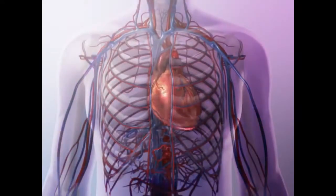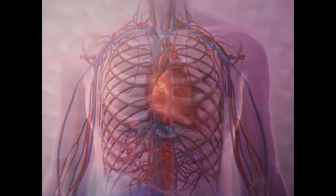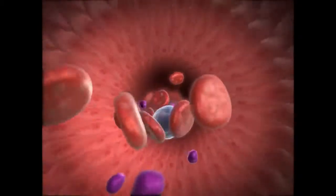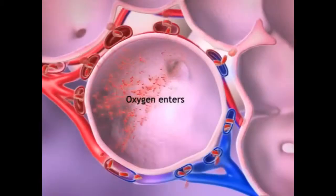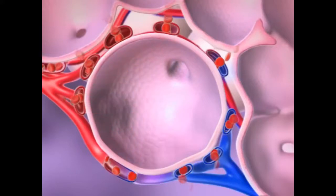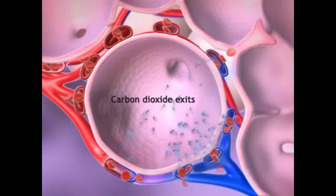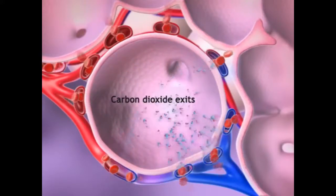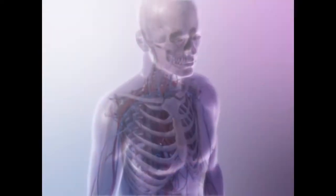Circulating blood supplies cells throughout the body with oxygen and removes waste carbon dioxide. Oxygen is absorbed into the bloodstream through tiny air sacs in the lungs called alveoli. As oxygen diffuses in, carbon dioxide moves out and is exhaled.